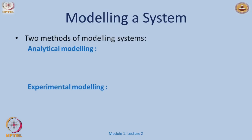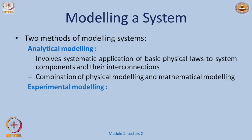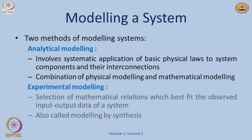The methods of modeling can be classified as either analytical modeling or experimental modeling. In analytical modeling, we apply basic physical laws to model systems and their interconnections, then combine them to arrive at a mathematical model. Experimental modeling involves selecting a mathematical relation that best describes the observed input-output data of a system — also called modeling by synthesis, something we may have done in electrical engineering labs.